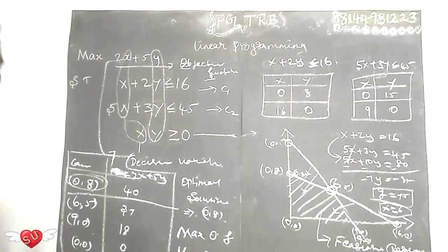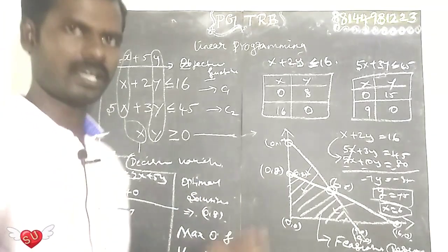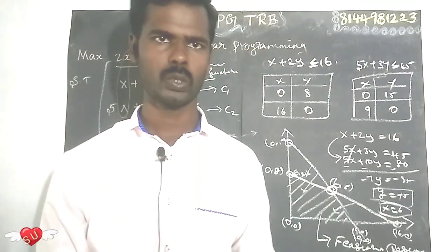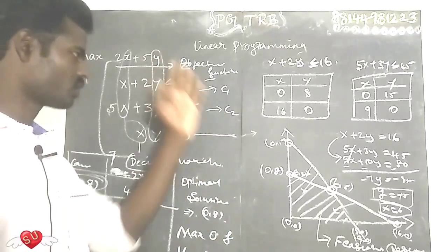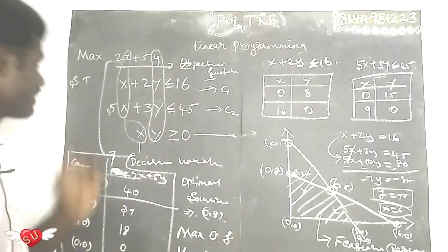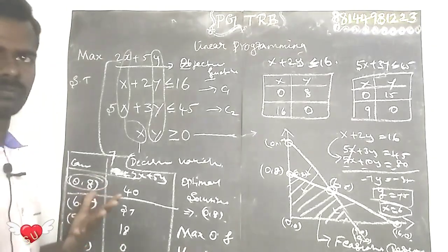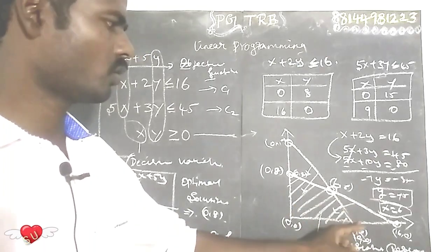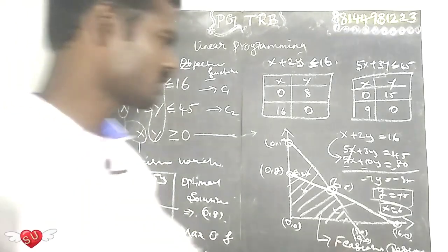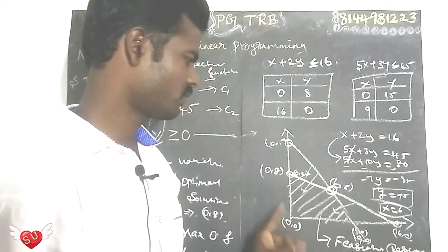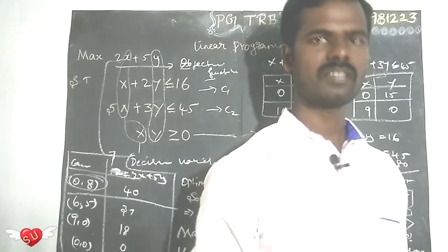One more question — for minimum, the equation changes. For maximum, get the maximum value; for minimum, get the minimum value. In the feasible region, you identify the feasible region points and apply the basics.